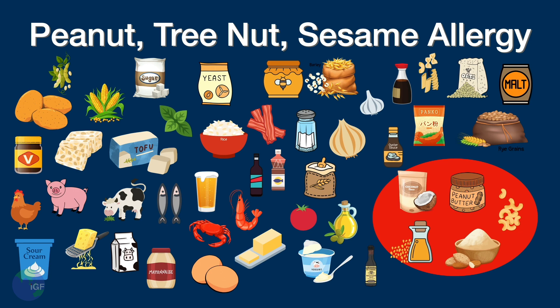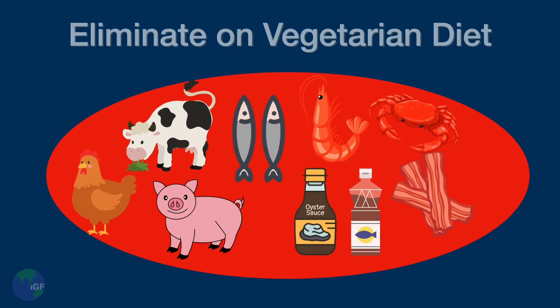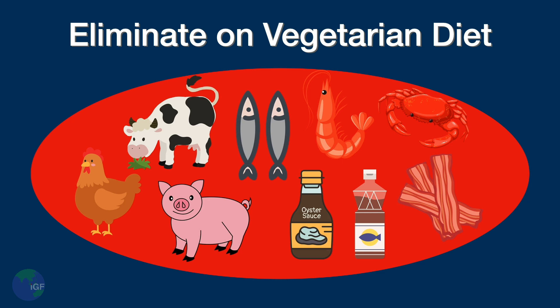The vegetarian diet eliminates meat. In general, anything with a heartbeat is off limits. In addition to the usual suspects such as chicken, beef, pork, fish, and shellfish, vegetarians also eliminate foods that include meat as an ingredient, such as oyster sauce, fish sauce, or chicken broth.